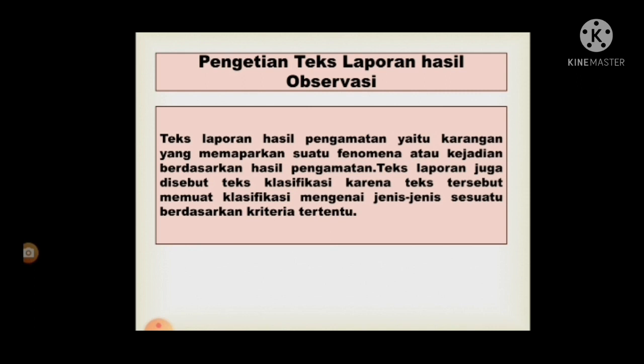Untuk struktur teks laporan hasil observasi meliputi yang pertama pernyataan umum atau klasifikasi, yang kedua deskripsi bagian, dan yang ketiga deskripsi manfaat.